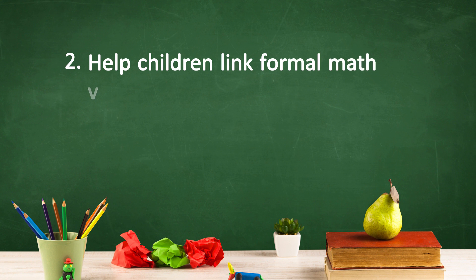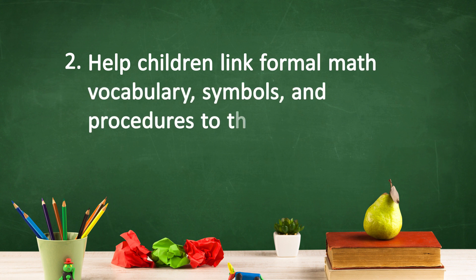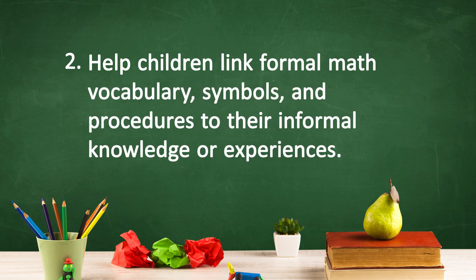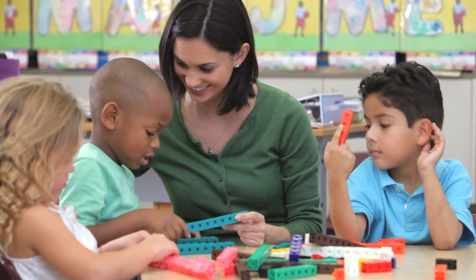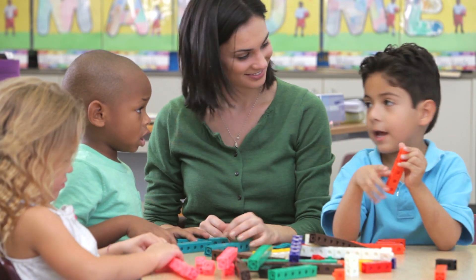The second way to carry out recommendation four is to help children link formal math vocabulary, symbols, and procedures to their informal knowledge or experiences. Teachers should explicitly teach children math words so that they have the vocabulary needed to connect their informal knowledge to formal terms. Teachers can start with informal vocabulary and then connect those familiar terms to formal terms. For example, teachers might begin with the informal phrase 'takeaway' and then later explain that 'subtract' has the same meaning.